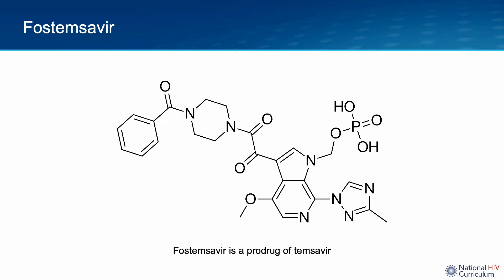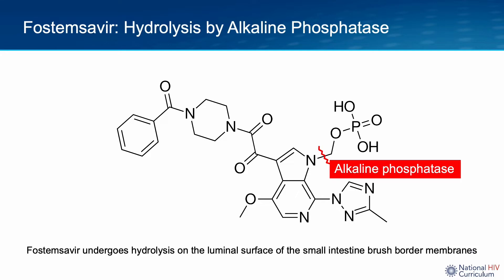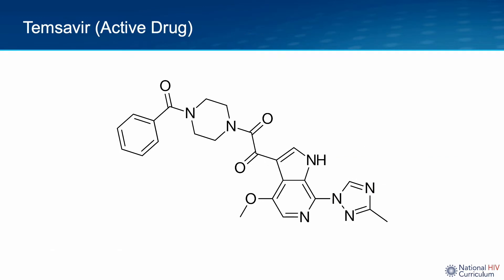This is the chemical structure of Fostemsevir, which is actually a prodrug. The active drug is called Temsavir. The advantage of administering Fostemsevir is it has better solubility and dissolution properties than Temsavir and is more stable under acidic conditions. However, Fostemsevir undergoes rapid hydrolysis once it reaches the luminal surface of the small intestine brush border membrane. This hydrolysis, or cleavage of a side chain, is performed by alkaline phosphatase, as illustrated here, and this is what converts Fostemsevir to the active drug Temsavir. Temsavir is what is absorbed and what is detected in the plasma after a person takes Fostemsevir.